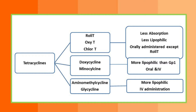There is no specific classification for tetracyclines, but a classification is used here to explain characteristics — whether a drug is lipophilic or hydrophilic, and how it is administered. The first group includes rolitetracycline, oxytetracycline, and chlorotetracycline. These are less lipophilic, less absorbed, and everything is orally administered except rolitetracycline.